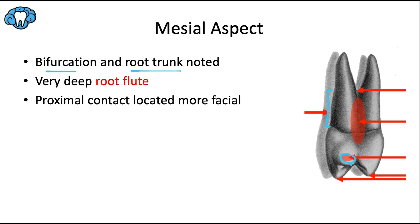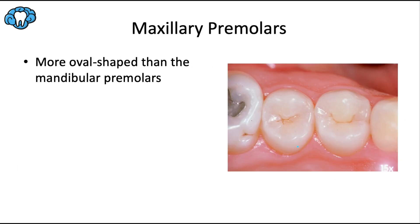The proximal contact is located a bit more facially than we're used to seeing, which is also the norm for posterior teeth. That makes the lingual embrasure larger than the facial embrasure, allowing food to be directed toward the palate and tongue. You can really appreciate that the lingual embrasure is a lot deeper and larger, and the proximal contact is located facial to the center of the tooth.